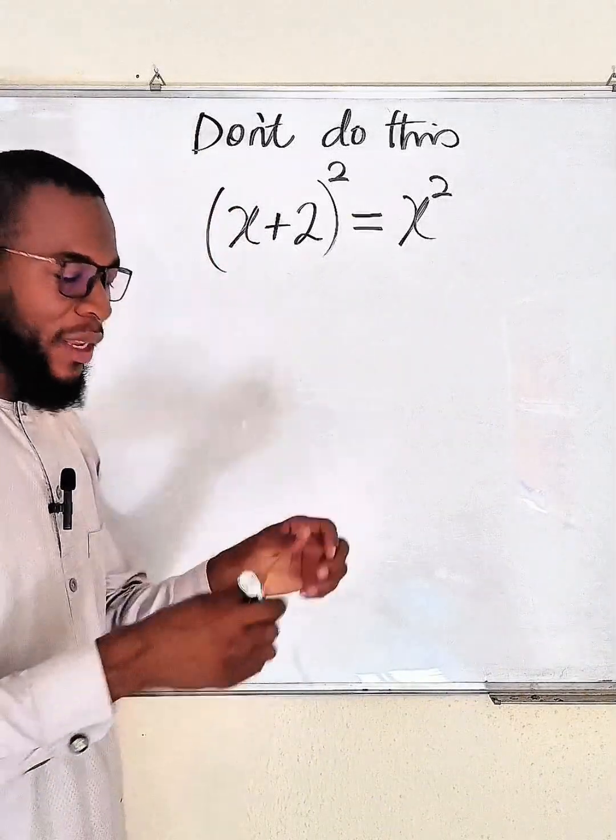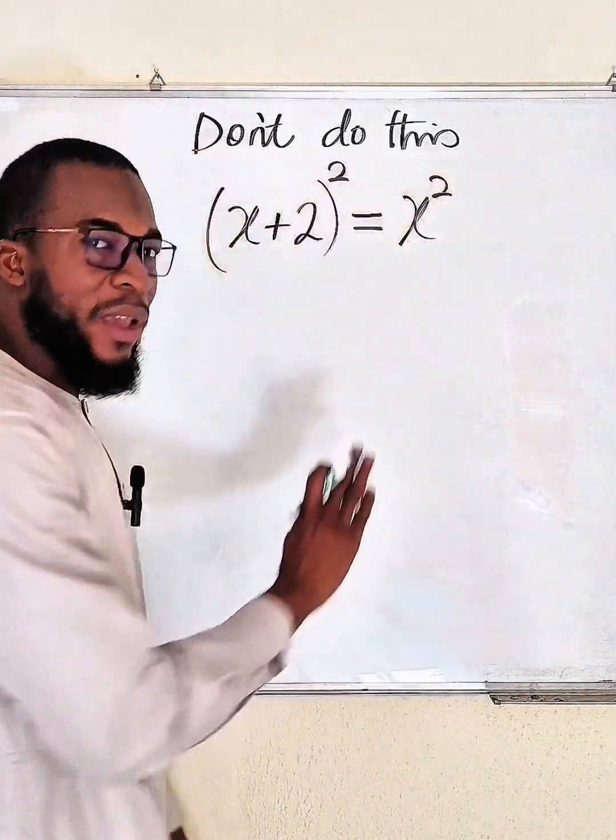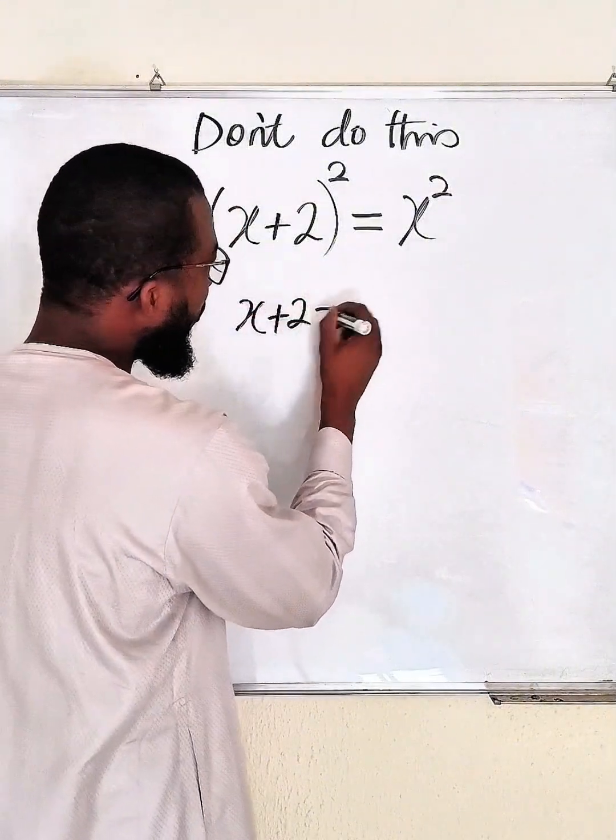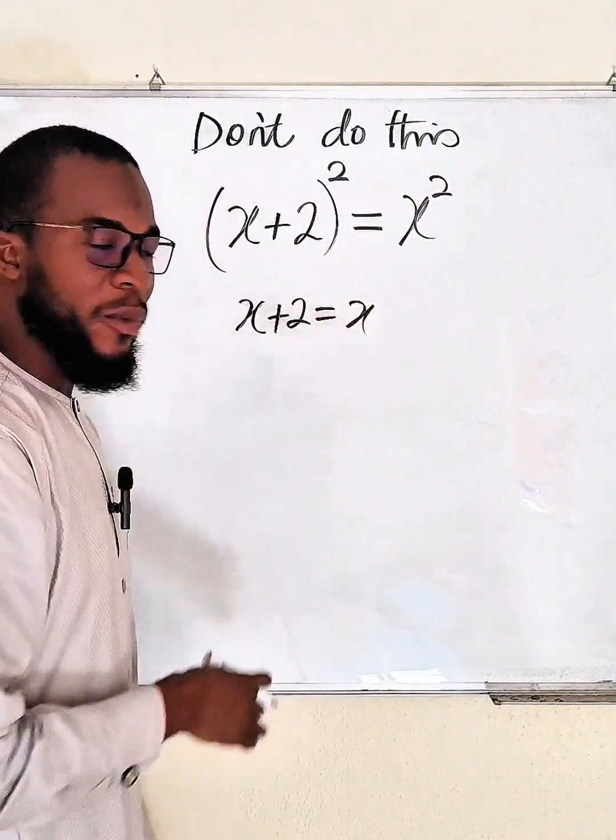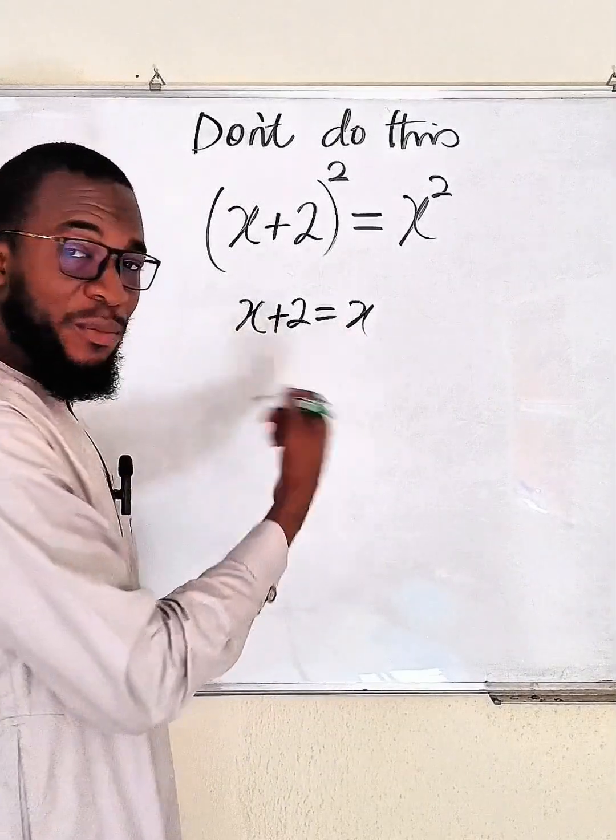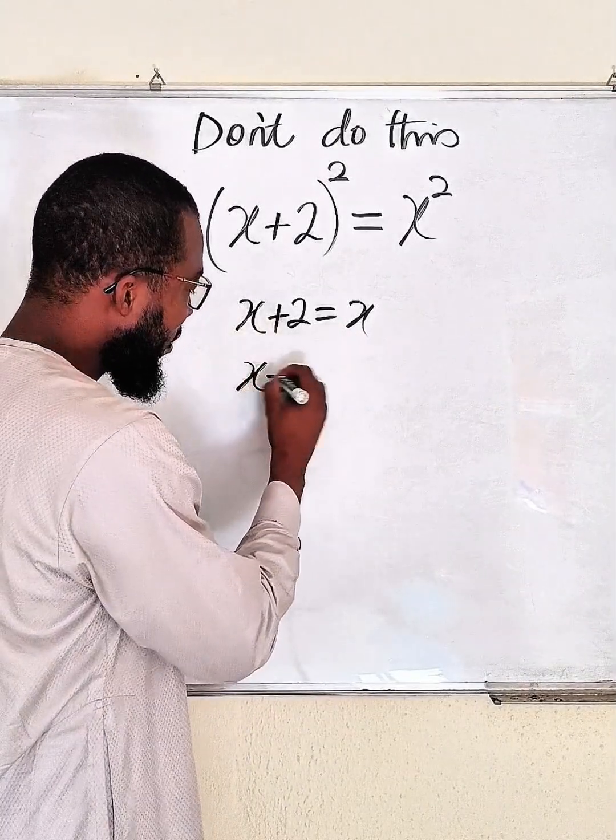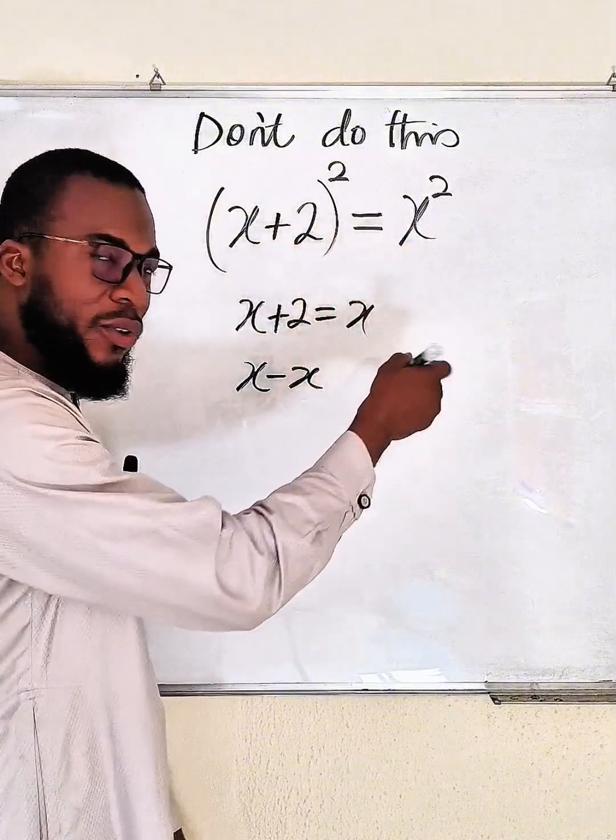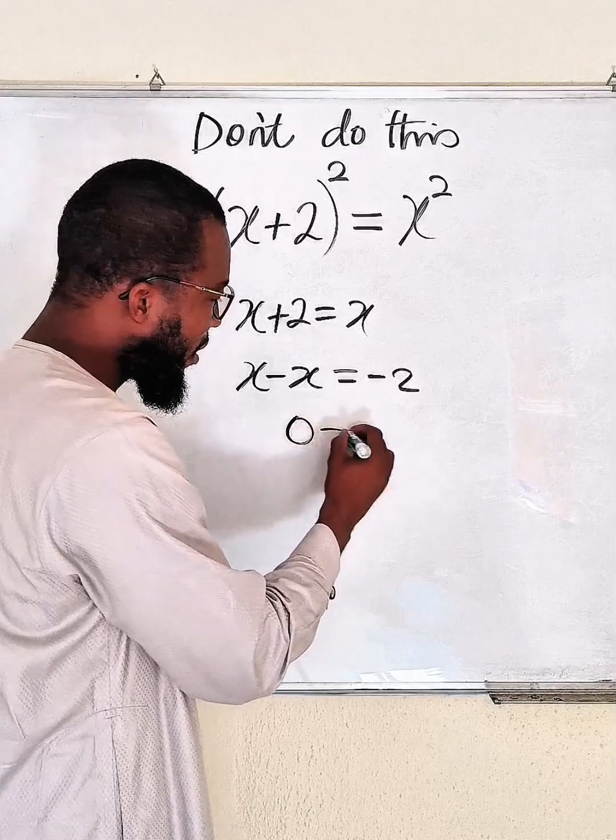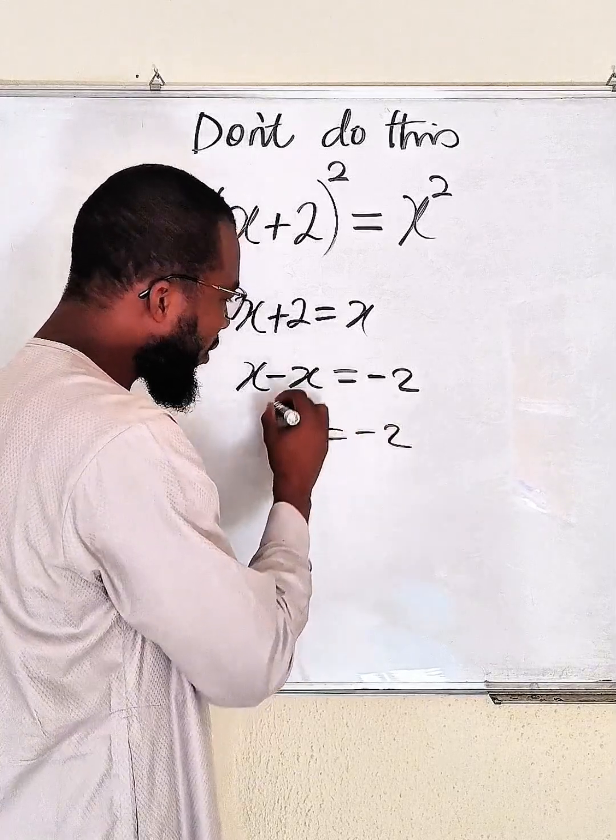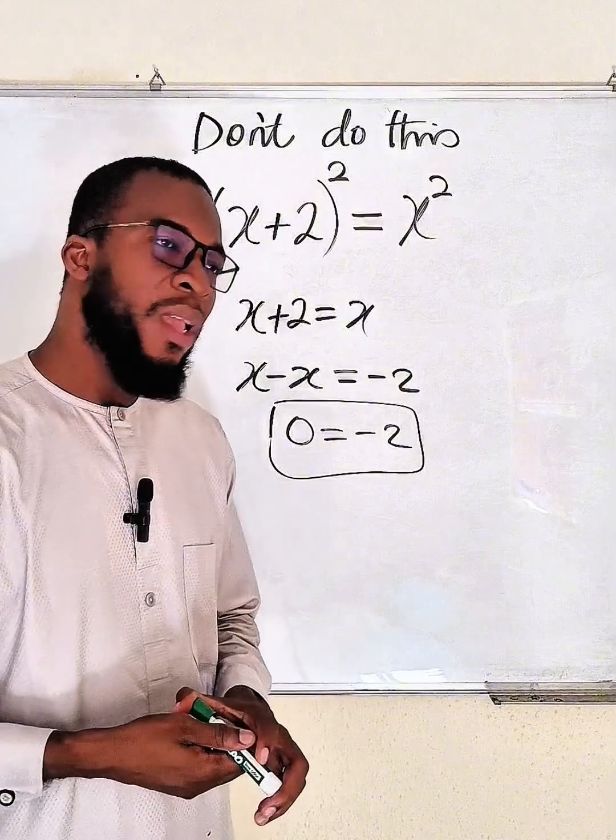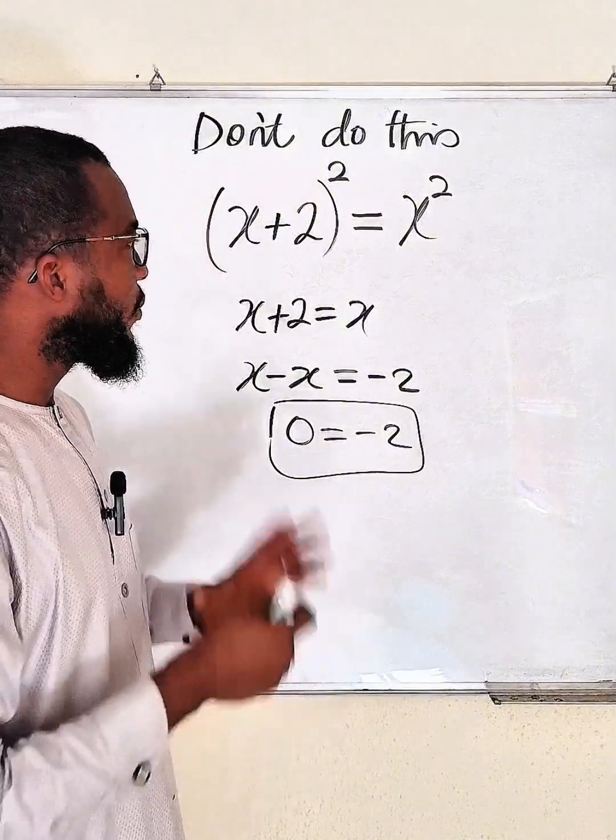But let's start it. First, having the same exponents, we say that x+2 equals x, the bases, right? So let's just try to solve for x. Bring this x inside, it becomes negative. Take 2 to the other side, it becomes negative 2. x minus x is 0, right, and this is negative 2. So what are you solving for? Does this make any sense? No.